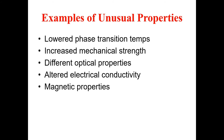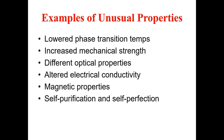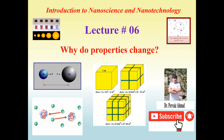Self-purification and self-perfection — nanomaterials have this particular characteristic. If you make something from that material, it does not allow imperfections or roughness; these materials do not allow foreign impurities or dust or other things to reside there, because of the perfection that this material has. As a result, it remains self-purified and contains a self-perfection characteristic.